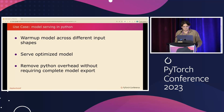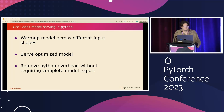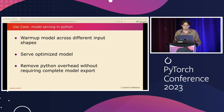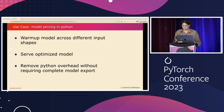One use case is model serving in Python. Cuda graphs completely remove CPU overhead, so it's a great way to serve optimized deployment in Python without Python overheads. Warm up your model first, then serve. There are reasons to avoid Python deployment such as compilation time — for those use cases, the AOT inductor is great, which Ben will be talking about later.